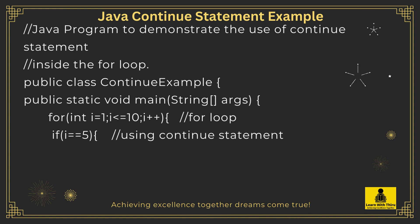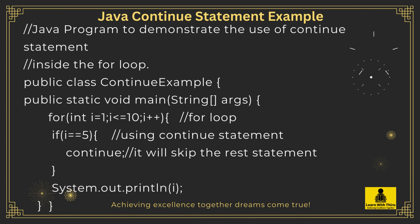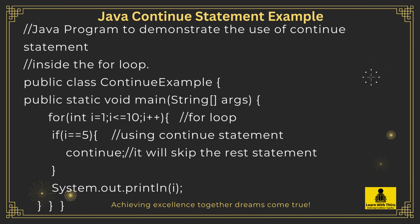Public class ContinueExample. Public static void main(String[] args). For loop: for int i equals 1, i less than or equals 10, i plus plus. If i equals equals 5, using Continue Statement: continue — it will skip the rest of the statement. System.out.println(i).